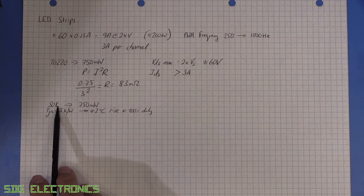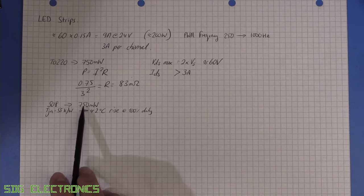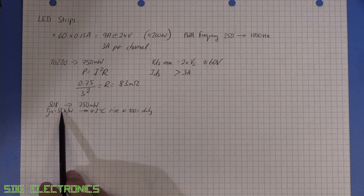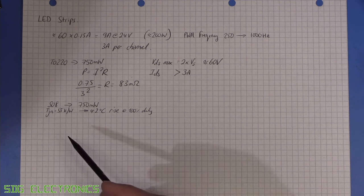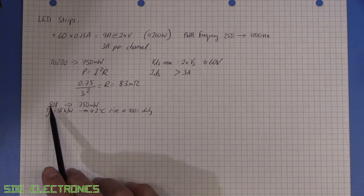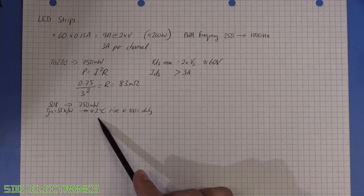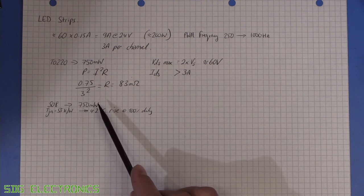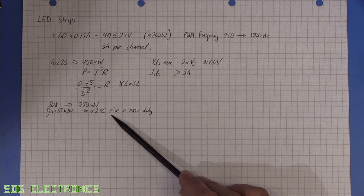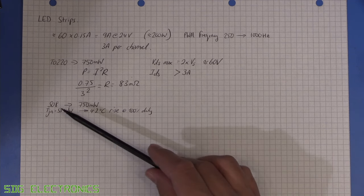But if we went with an SO8 package we do need to have a think about the thermals here. So if we look in the data sheet it typically says most of the junction to ambient temperature rise is going to be around 55 kelvins per watt. Now there are power packages with a big pad on the bottom that you can solder onto your PCB. This is for a standard SO8 package and at 750 milliwatts that means that we would see a temperature rise of 42 degrees C which is probably fine for this application as well. So we could look at an SO8 package.